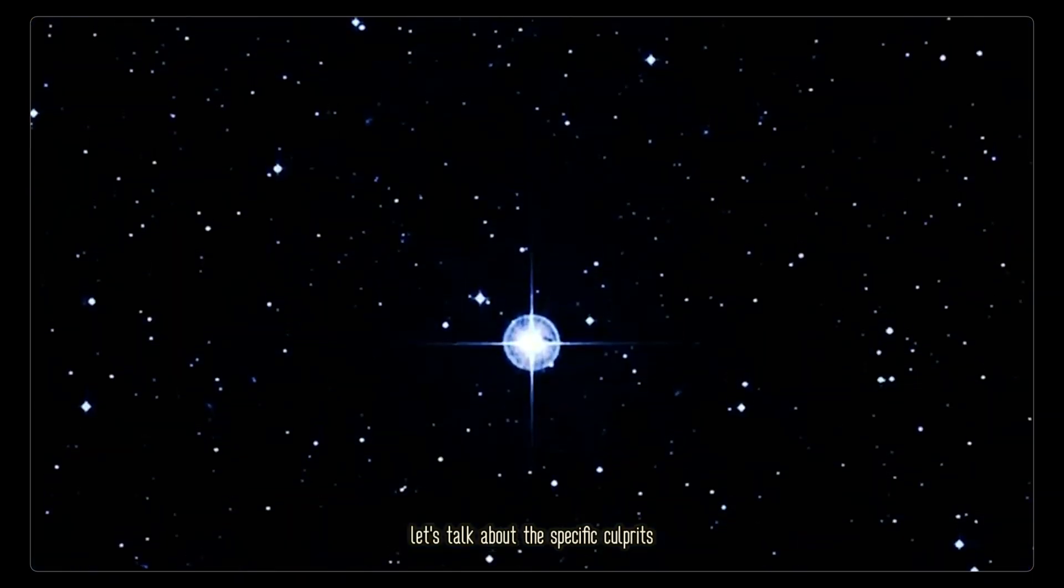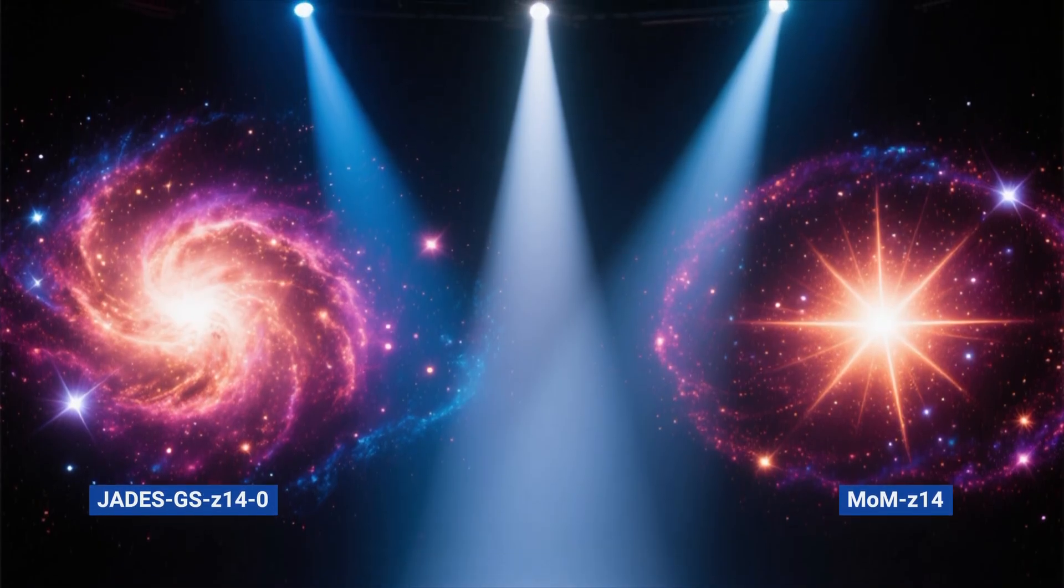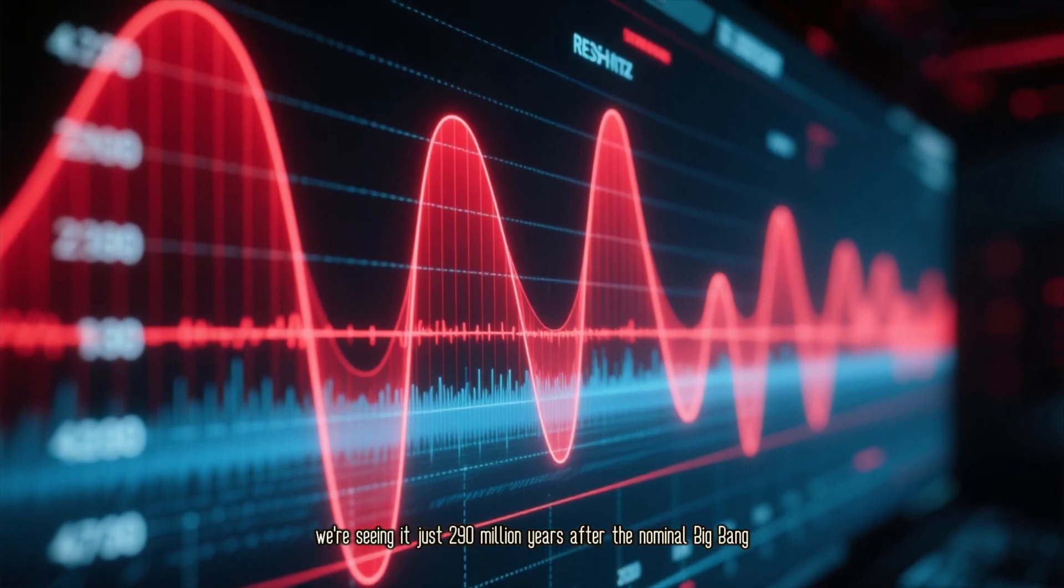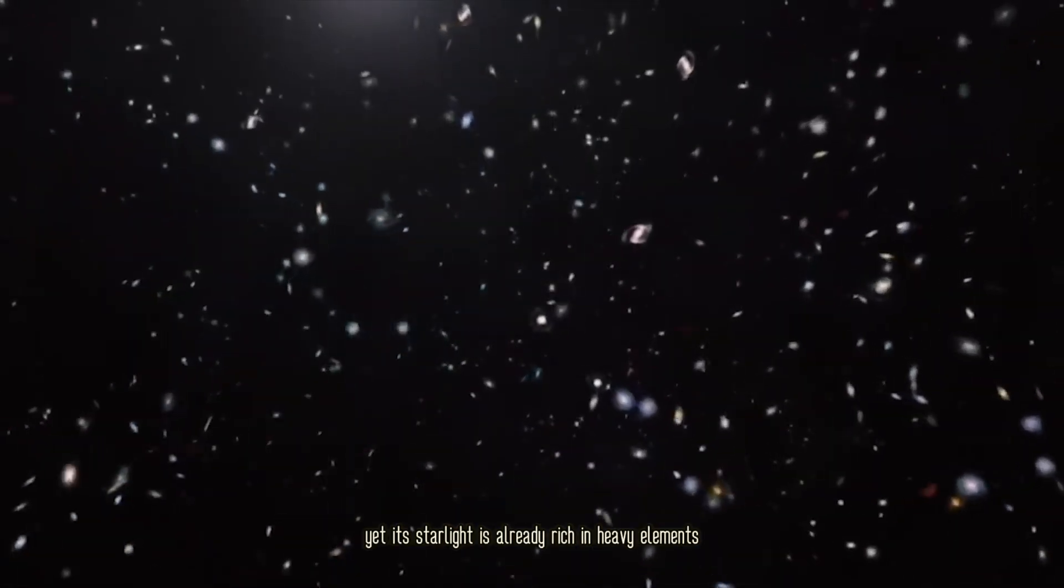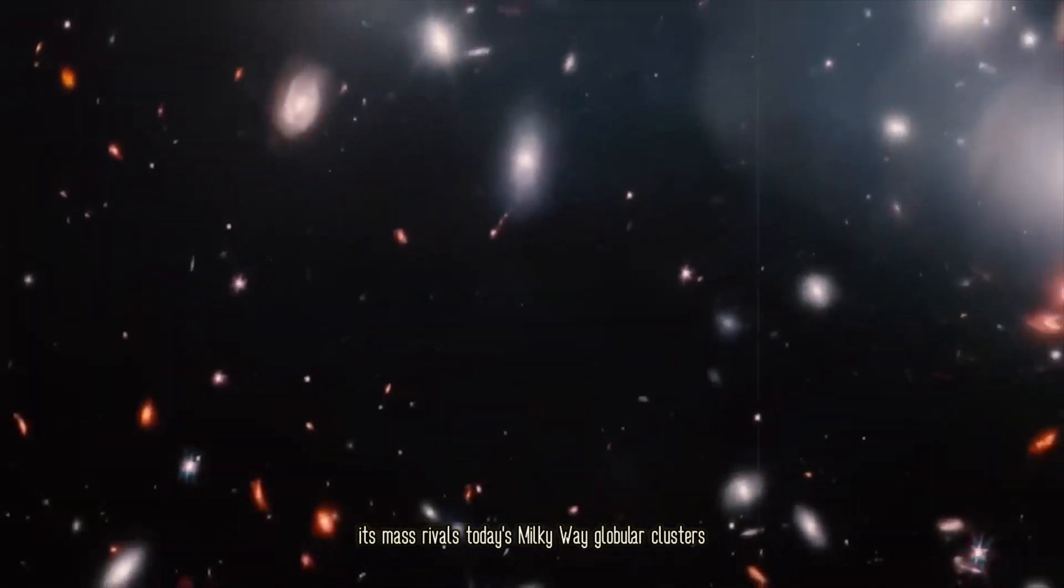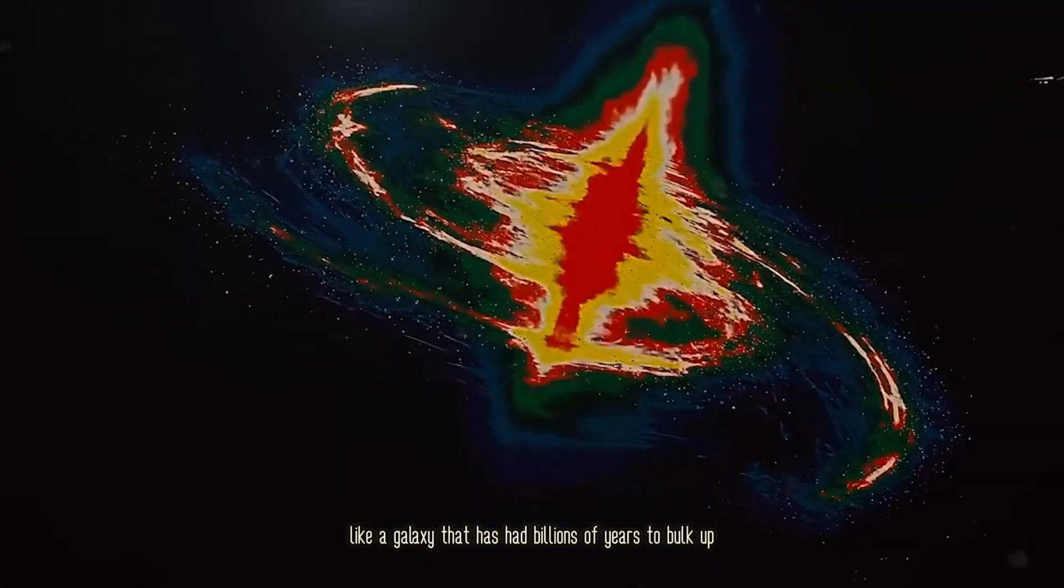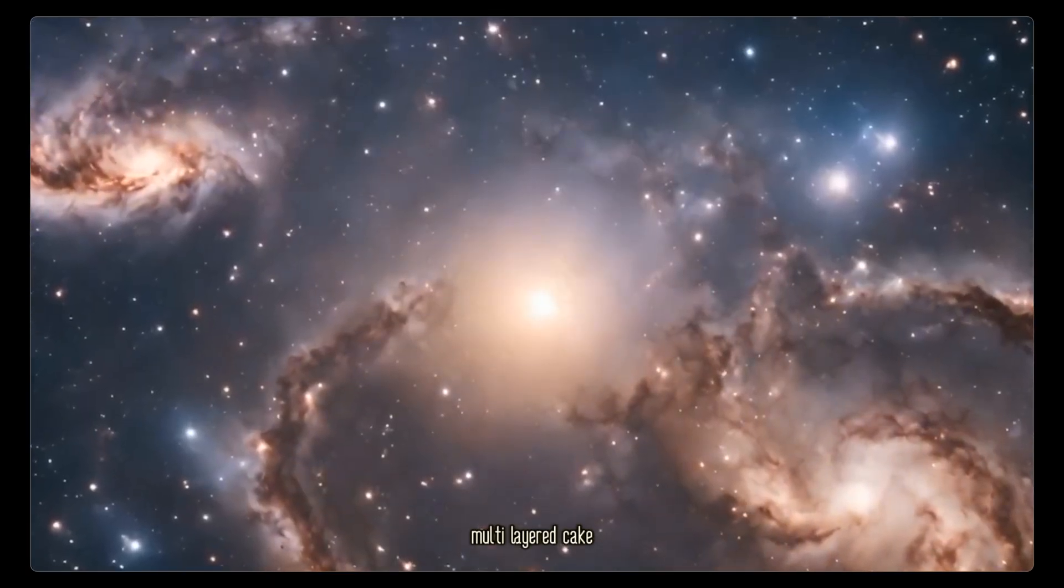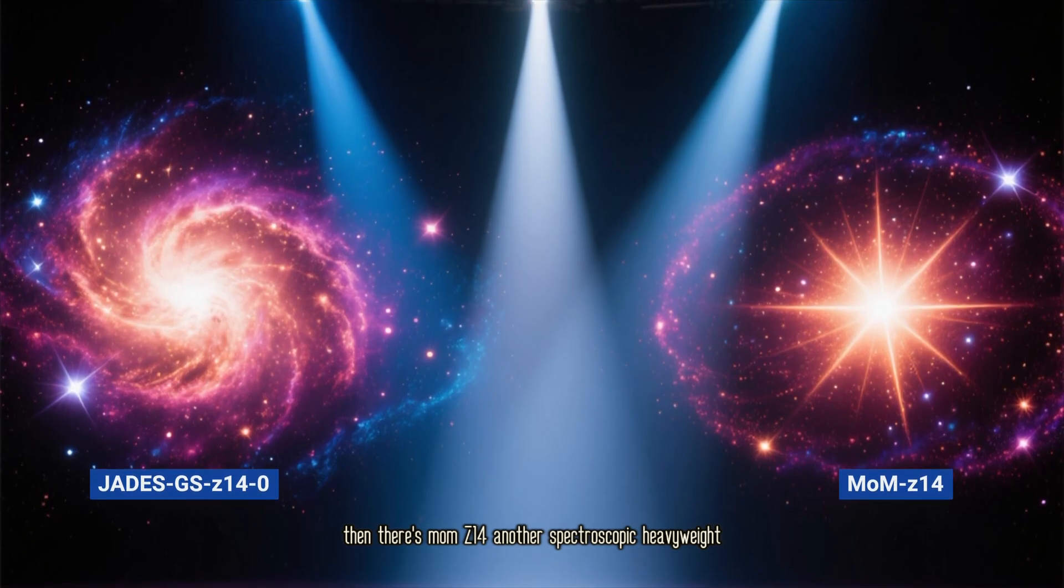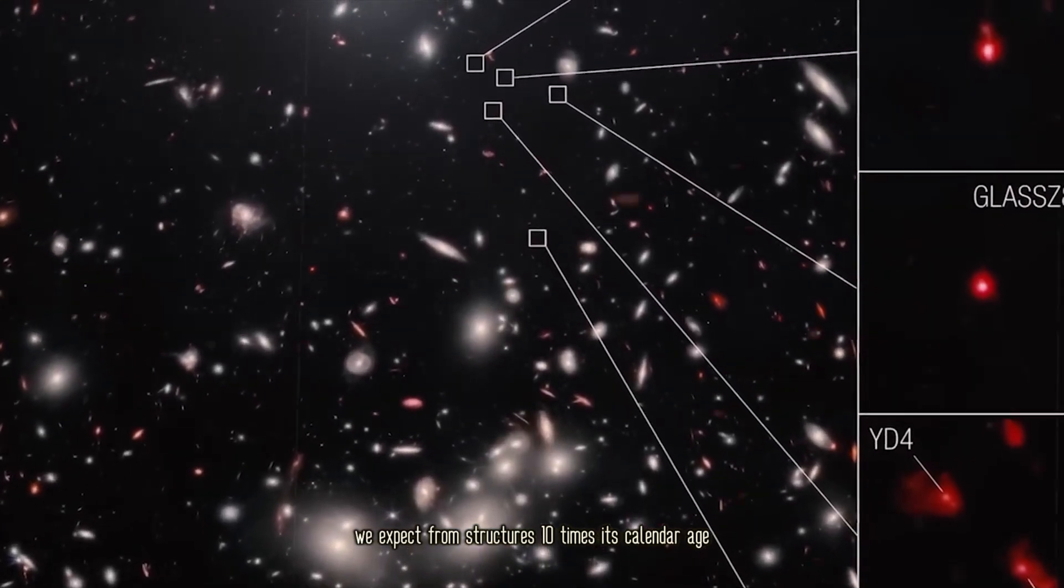Let's talk about the specific culprits. Look at JADES-GS-Z14-0. Its redshift is about 14. For context, that means we're seeing it just 290 million years after the nominal Big Bang, a mere blink in cosmic terms. Yet its starlight is already rich in heavy elements. Its mass rivals today's Milky Way globular clusters, and it is pumping out ultraviolet light like a galaxy that has had billions of years to bulk up. It's like finding a fully baked, multi-layered cake just moments after the first seeds of wheat were planted. Then there's MOMO-Z14, another spectroscopic heavyweight.